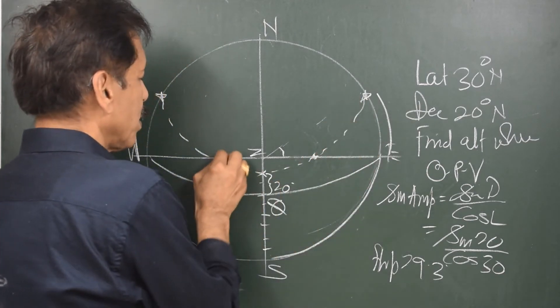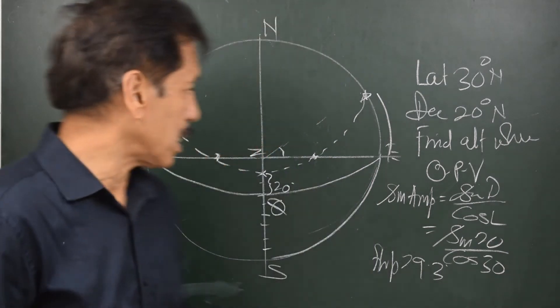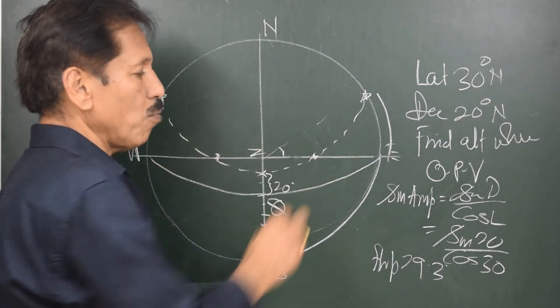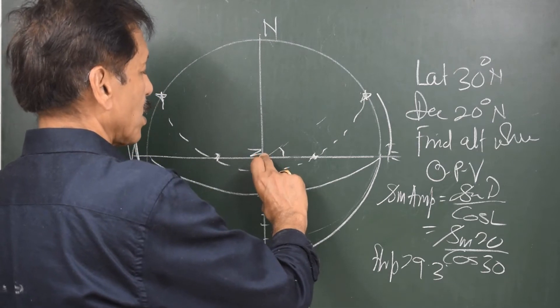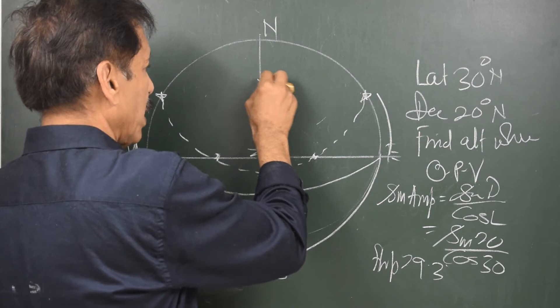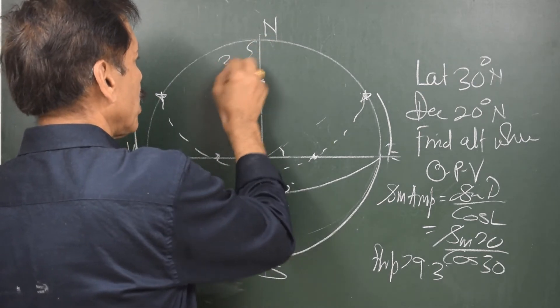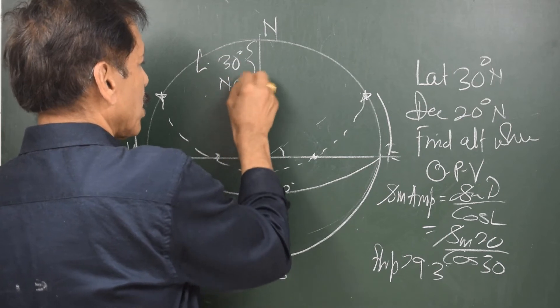Now, I need to draw a circle which passes through these three points and that can be drawn like this. This is the point at which and this is the point at which the body in her daily path is crossing the observer's prime vertical. When equinoctial is 30 degrees south of observer zenith, the pole also should come down by 30 degrees from the normal position.